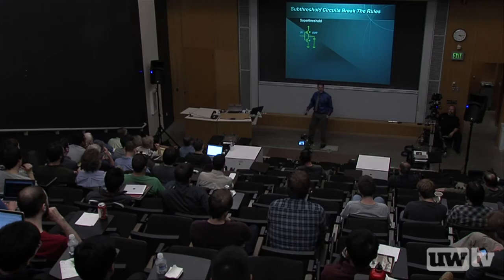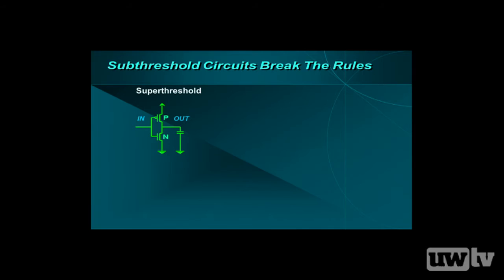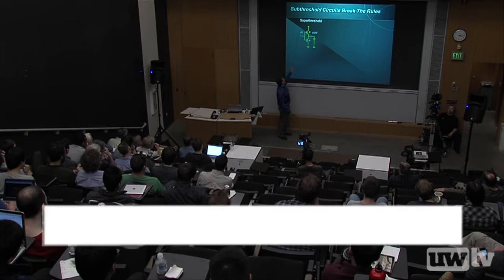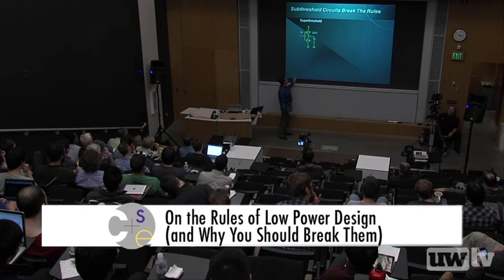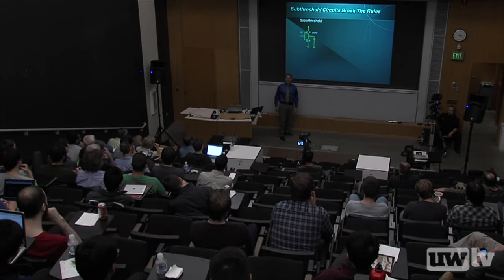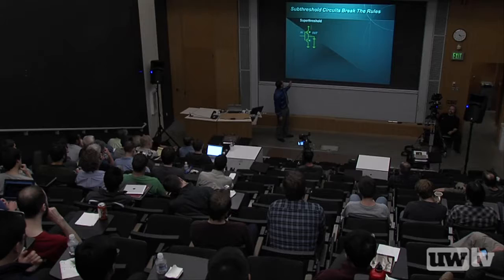Software people, circuits 101: this is an inverter — zero in, one out; one in, zero out. The way it works: high voltage at top, low voltage at bottom. When I put a zero in, it turns on the P device and turns off the N device — you get a short to power, that's a one. If I put a one in, it turns on the N device and turns off the P device, giving ground — that's a zero. That's how you compute: grab charge from power to make a one, throw it away to ground to make a zero.